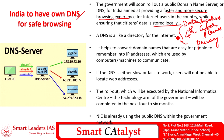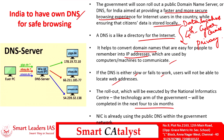DNS acts as a directory of the internet. Users remember websites by names, while computers remember websites by IP addresses. The domain name server acts as a medium between the user and the computer, converting domain names into machine-understandable IP addresses. If the DNS is slow or fails, users will not be able to locate web addresses efficiently, creating hassles in internet functioning. The rollout is expected to be completed in the next four to six months and will be undertaken by the National Informatics Centre.